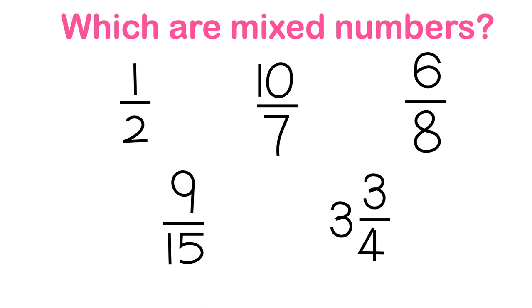Which are mixed numbers? 3 and 3 over 4 is a mixed number because it has a whole number 3 and fraction 3 over 4.